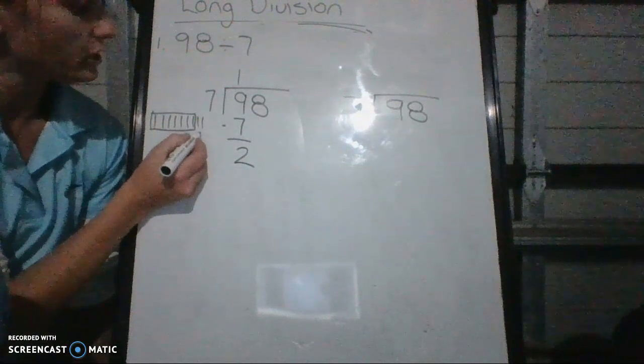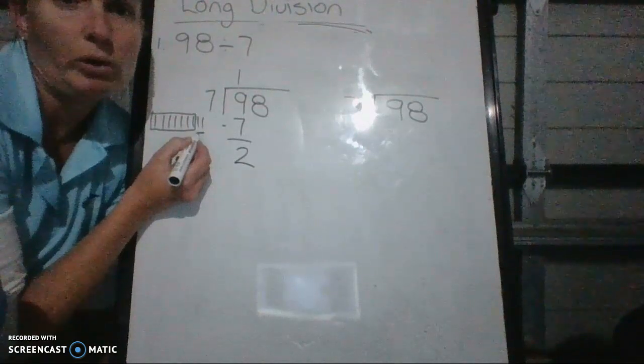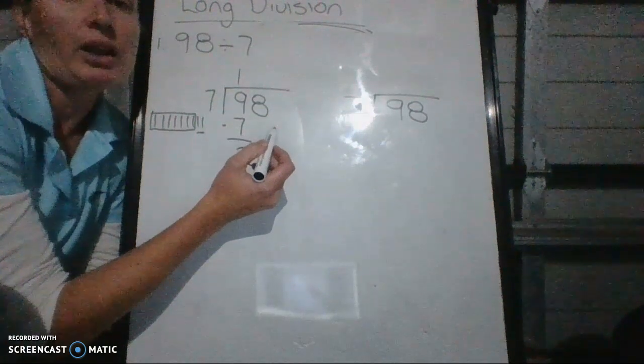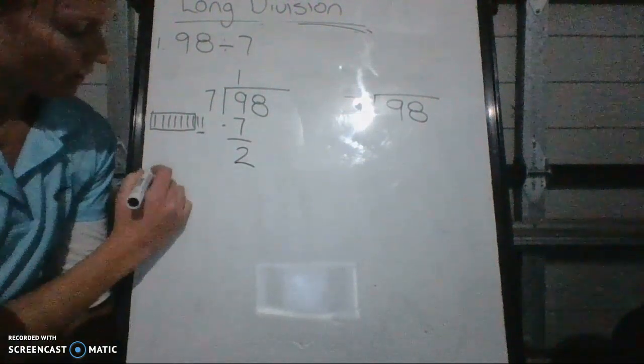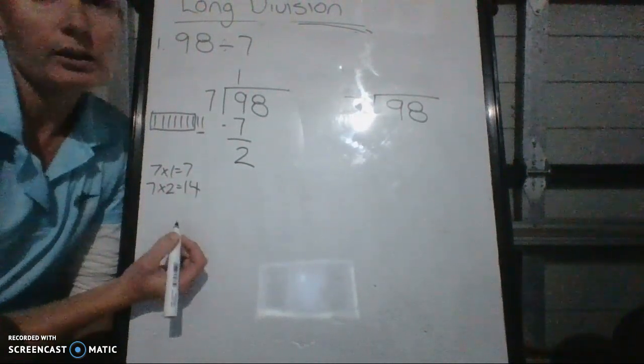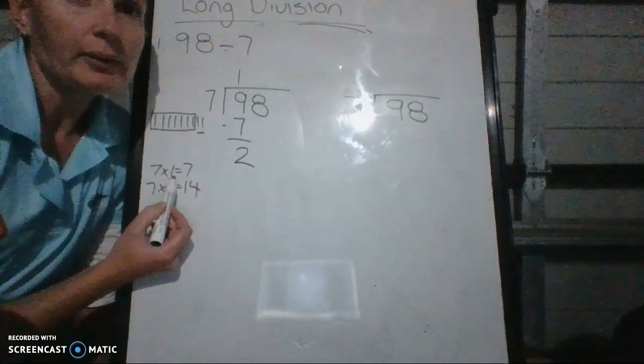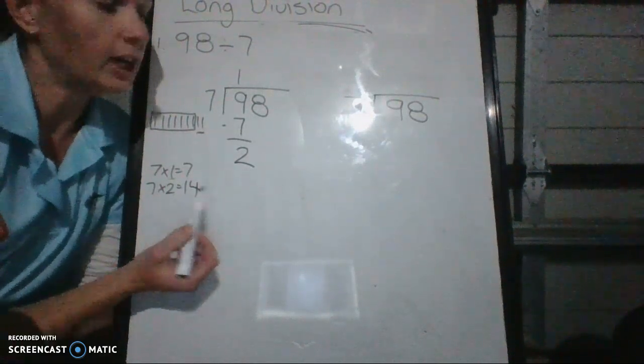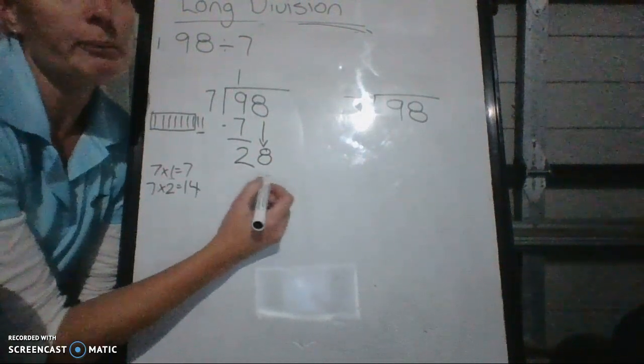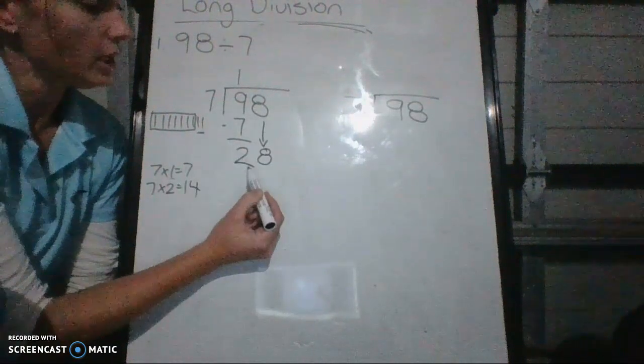Because this is how much we had left over after we couldn't group them anymore. Because I can't go up to 14 because that's too many. For instance, 7 times 1 is 7, but 7 times 2 is 14. So it's in between. So it's 1, but you can't go over. And then what you do, you drop down that 8. And then I'm left with 28. So you do the same thing. 7 into 28.